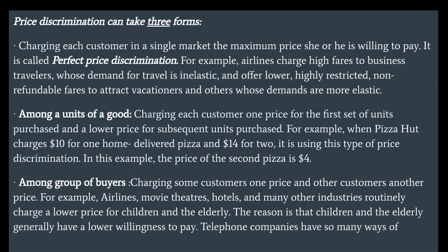Price discrimination can take three forms. First, charging each consumer in a single market the maximum price she or he is willing to pay — this is called perfect price discrimination. For example, airlines charge high fares to business travelers whose demand for travel is inelastic, and lower, highly restricted non-refundable fares to attract vacationers and others whose demands are more elastic.